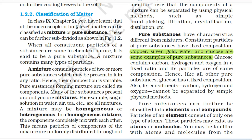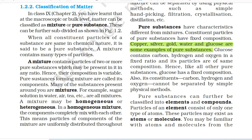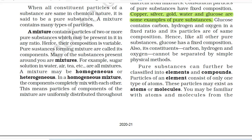1.2.2 Classification of Matter. At the macroscopic or bulk level, matter can be classified as mixture or pure substance. When all constituent particles of a substance are same in chemical nature, it is said to be a pure substance. A mixture contains particles of two or more pure substances which may be present in it in any ratio — hence their composition is variable. Pure substances forming a mixture are called its components. Many of the substances present around you are mixtures — for example, sugar solution in water, air, tea, etc.